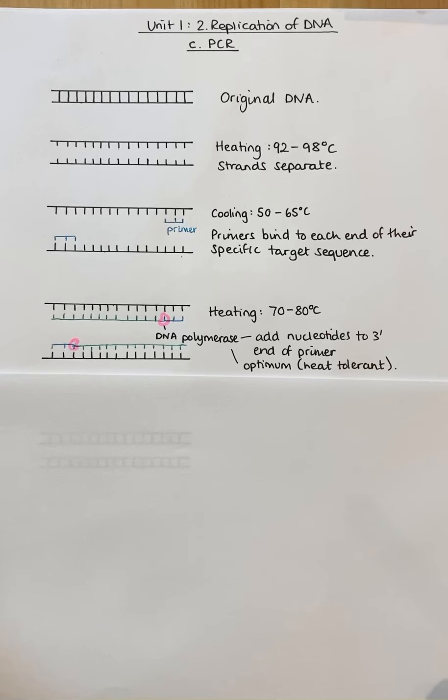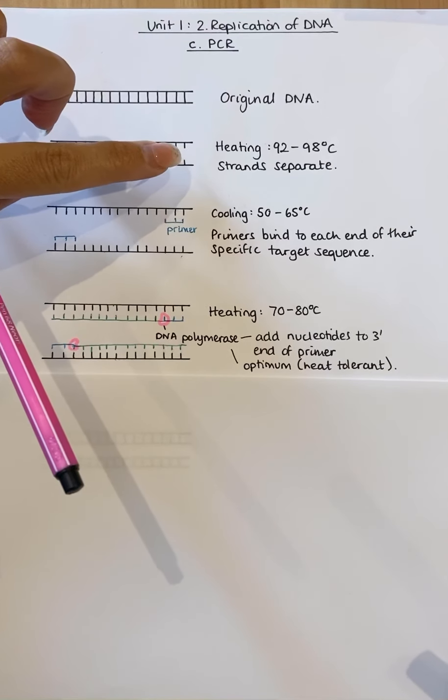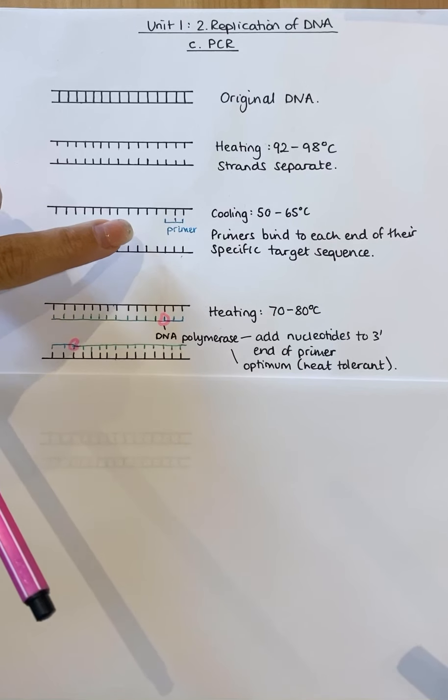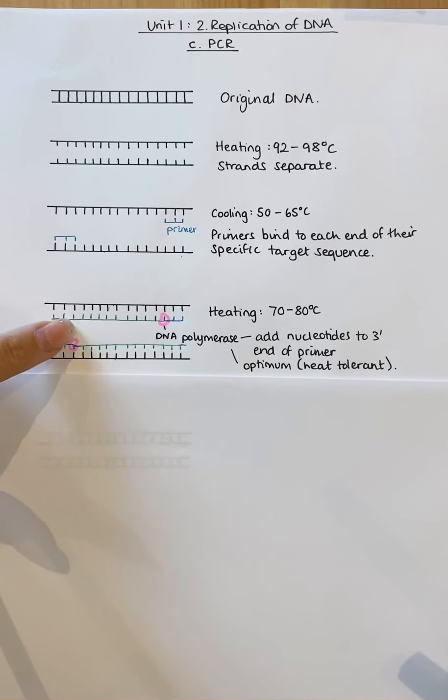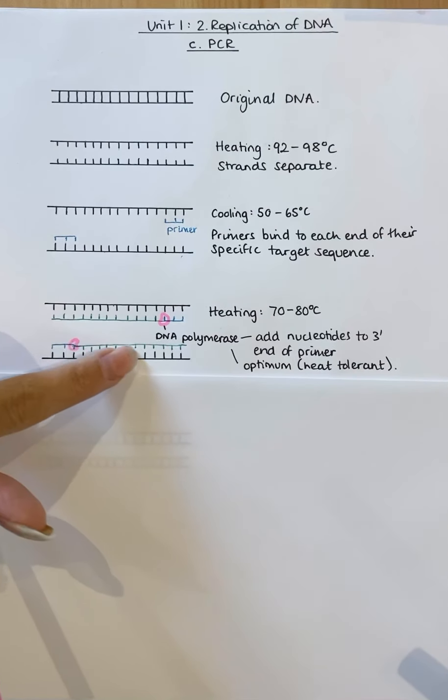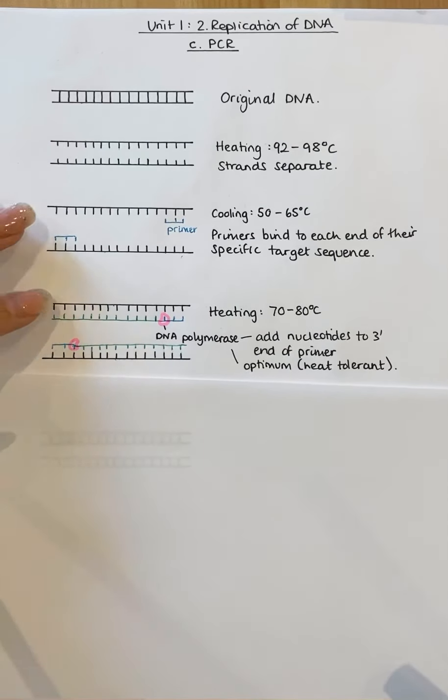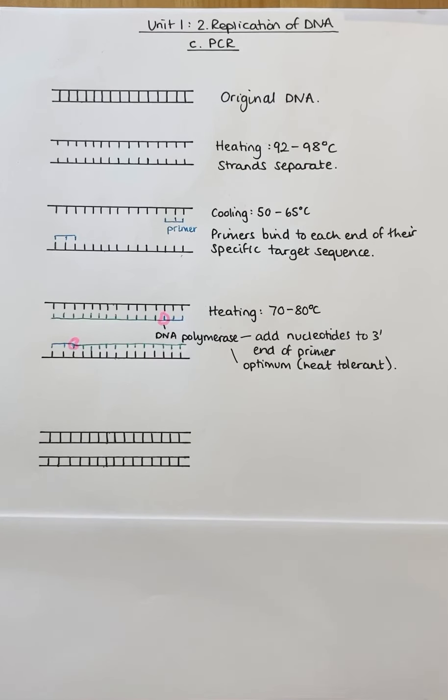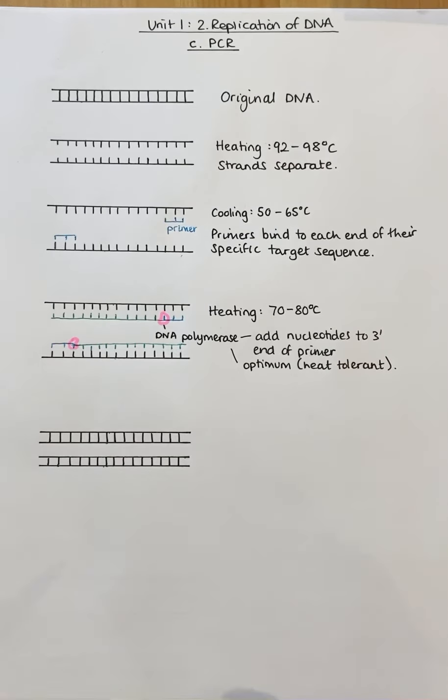So ultimately then, once you have heated and separated the strands, you have cooled and the primers have bonded, and then heating again allows that strand and two new strands to be replicated using DNA polymerase. So at the end of it, what you get is a final molecule of DNA on each side, so two new molecules of DNA.